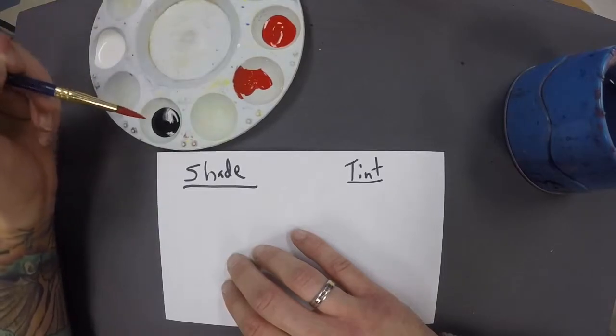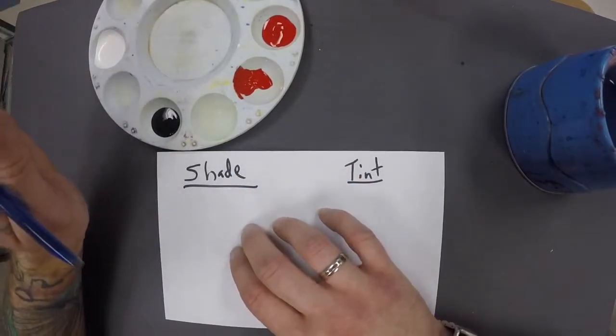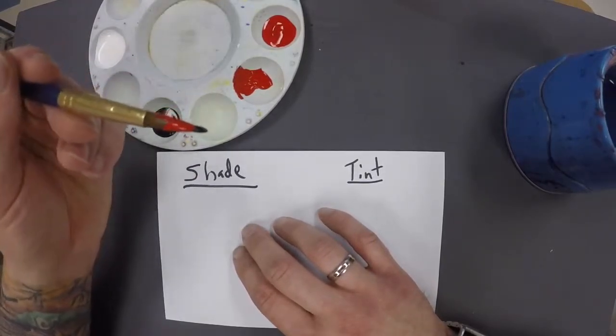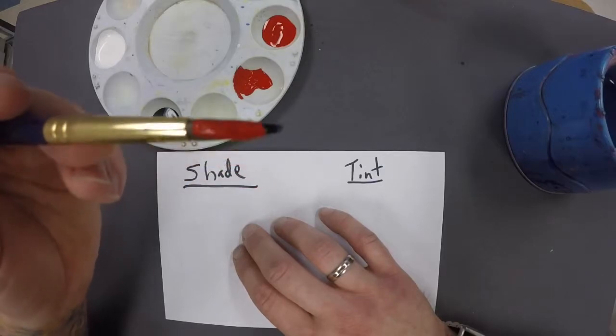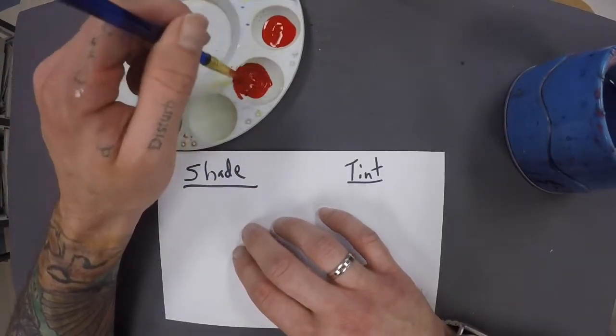So when we add black to a color, we create what's called a shade. Now when we do this, we have to be very careful. We use tiny, itty-bitty tiny amounts of black. It'll go a long ways.